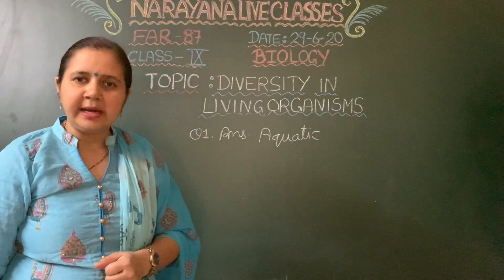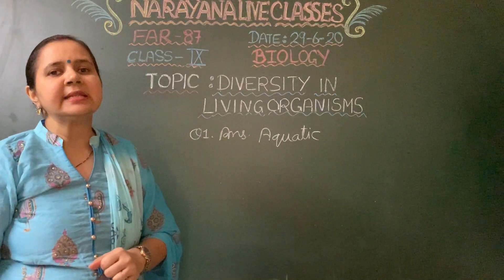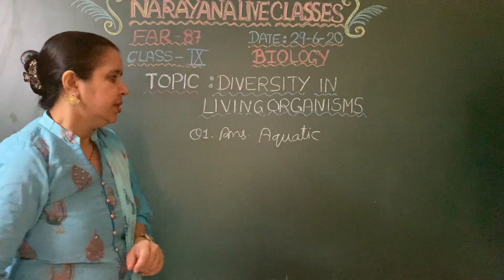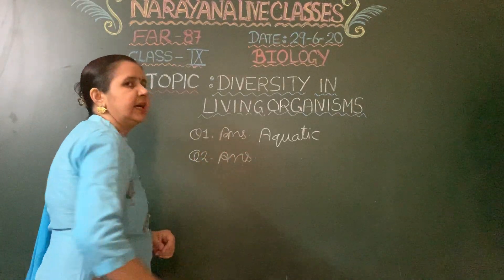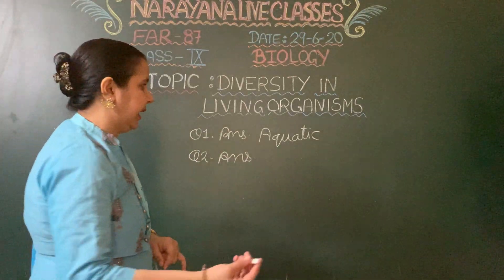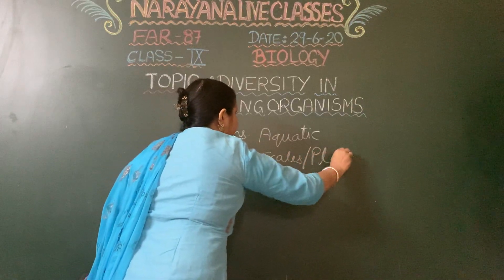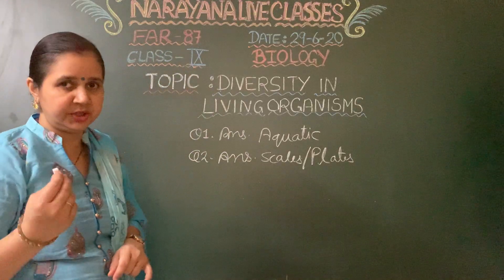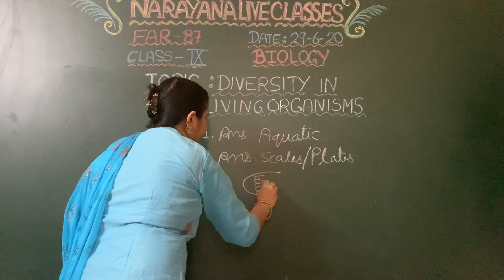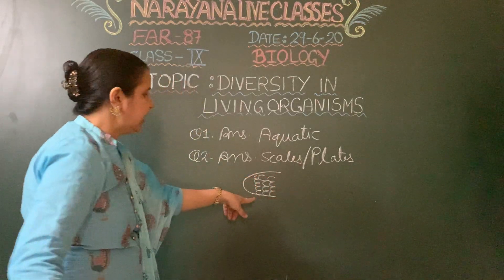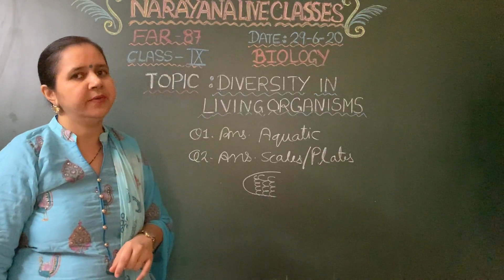Question number 2: a fish's skin is covered with small dash. The answer is the skin of fishes is covered with scales, which can also be called plates. If you have ever observed fishes closely, you can see these scales present all over the skin.